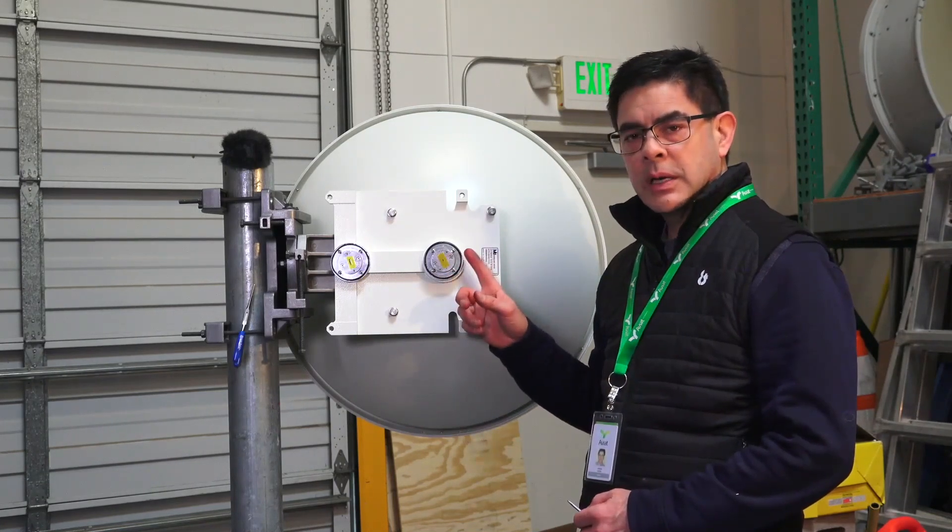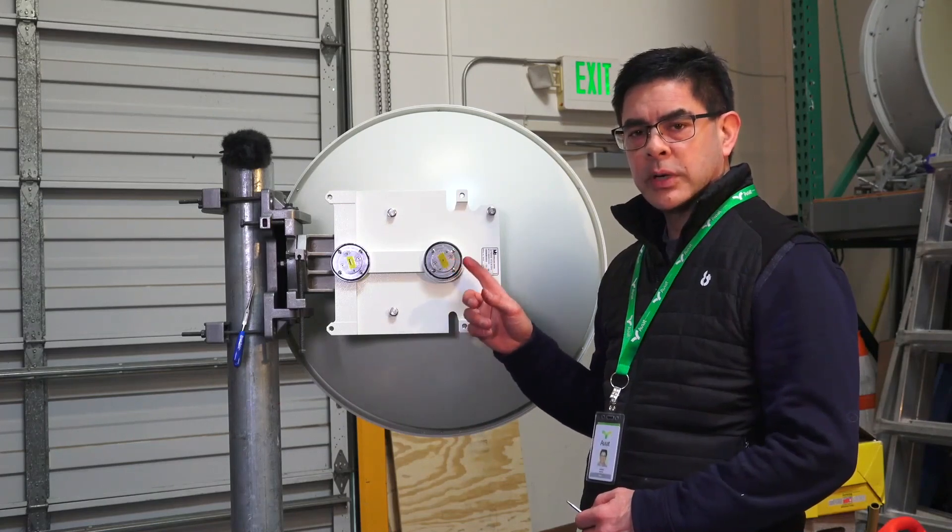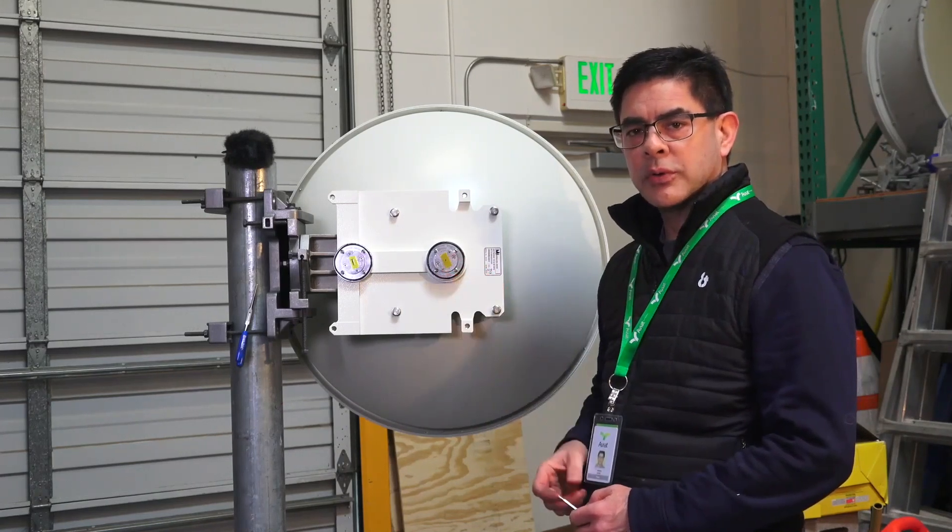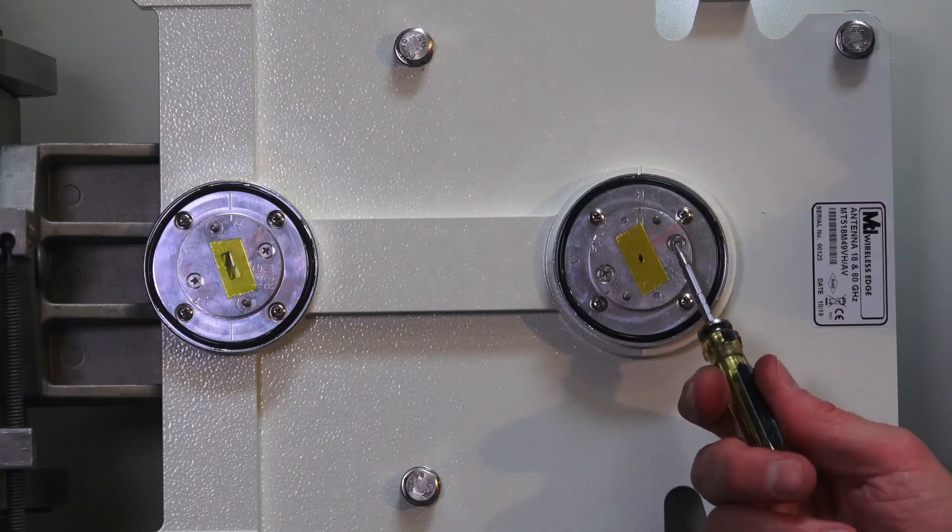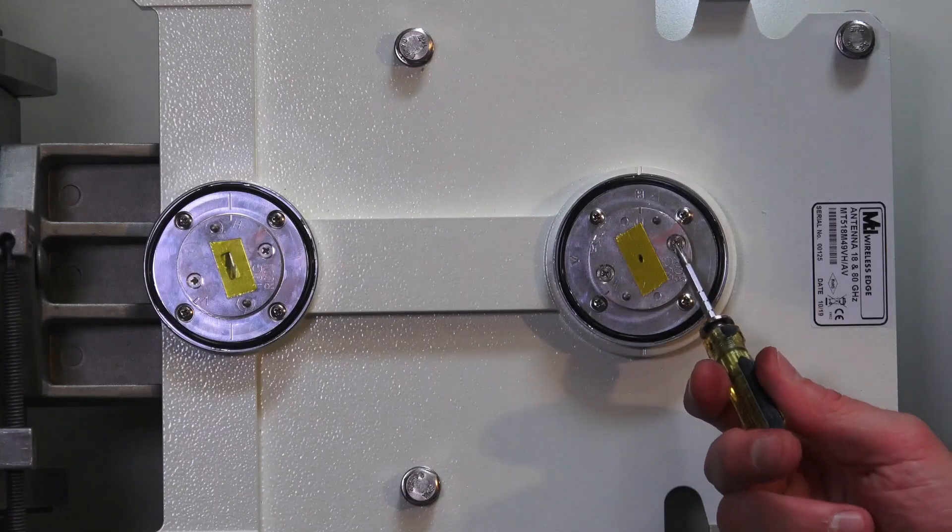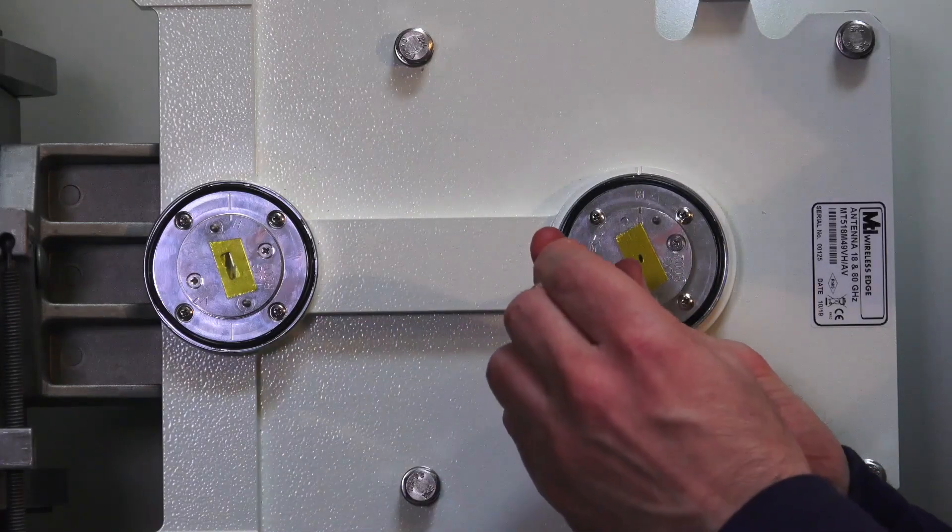We're going to start with the E-band antenna. There's going to be a number of small screws we're going to need to remove in order to set the polarization. First off, we've got two screws that hold the cover plate for the polarizer. I'll remove those.